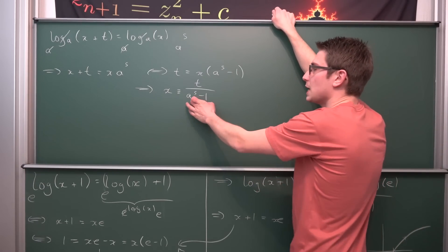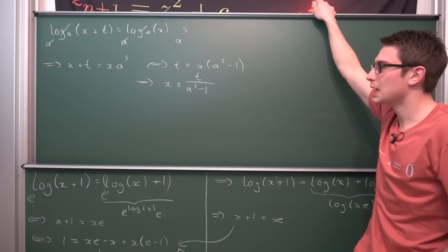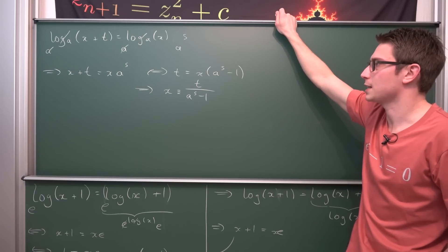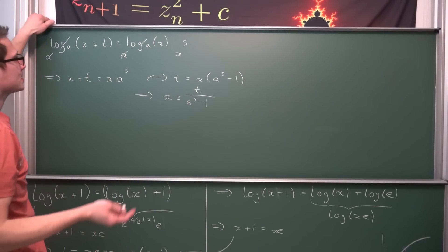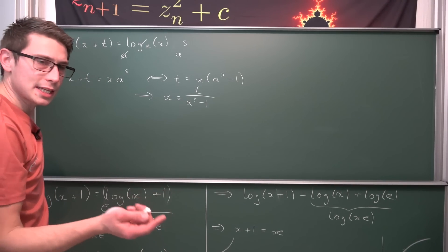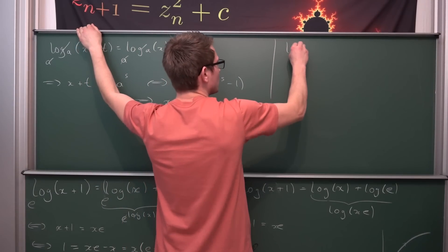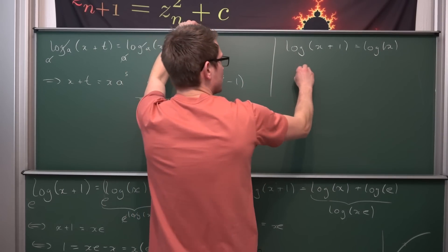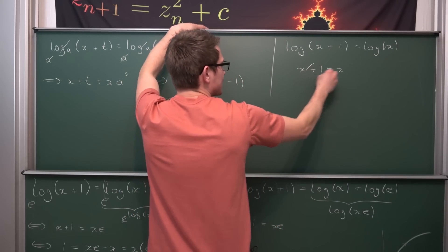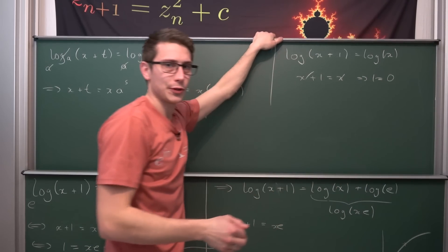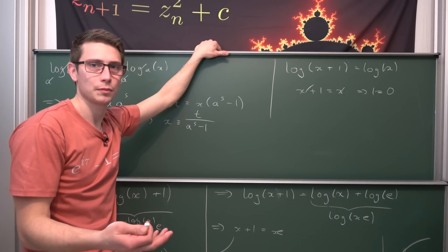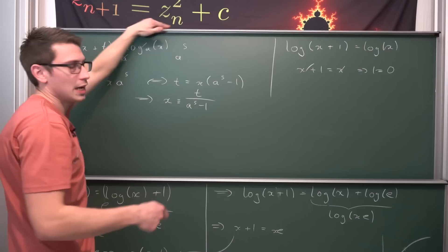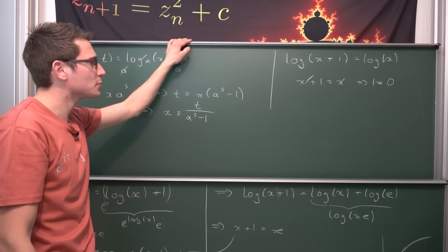This right here is the generalization stemming from the original problem. Once again, restriction: a to the s must not be equal to 1. This is only going to happen if either s is equal to 0 or a is equal to 1 — cases that shall not happen. Our equation wouldn't have a solution if s were equal to 0 — then we'd look for log of x plus 1 equals log of x. Taking base e on both sides gives x plus 1 is equal to x, x cancels out, giving us 1 equals 0. And also for a equal to 1, this also wouldn't have a solution.